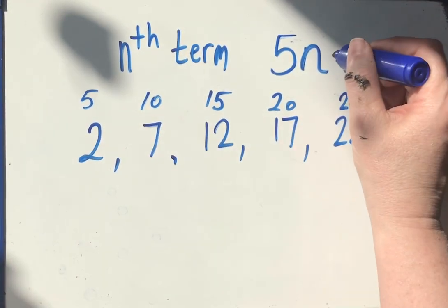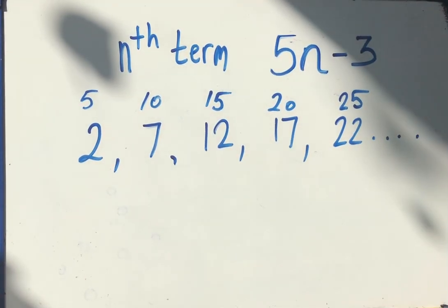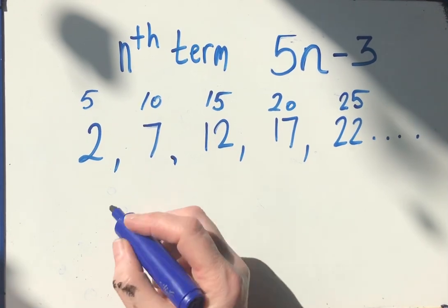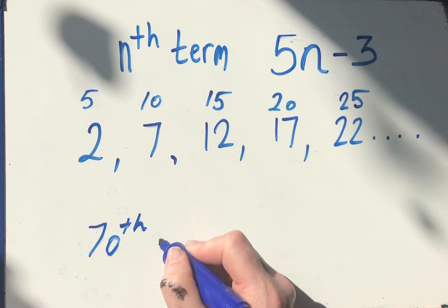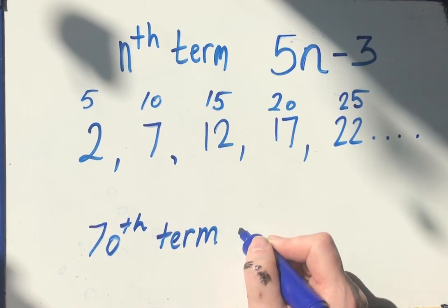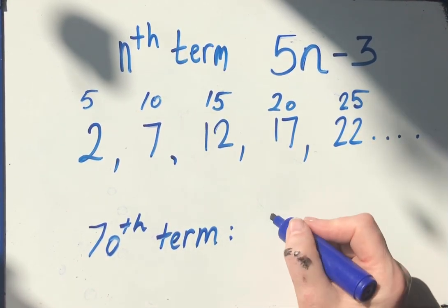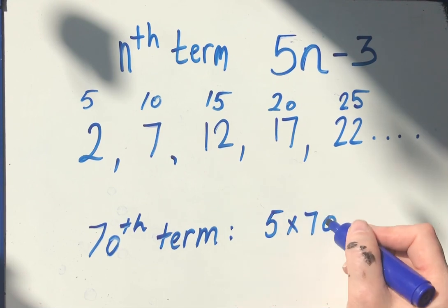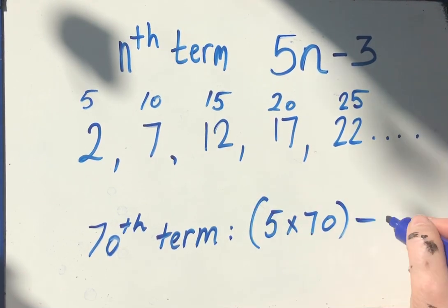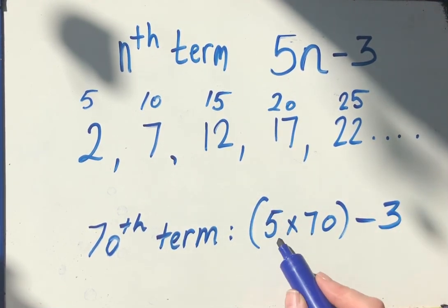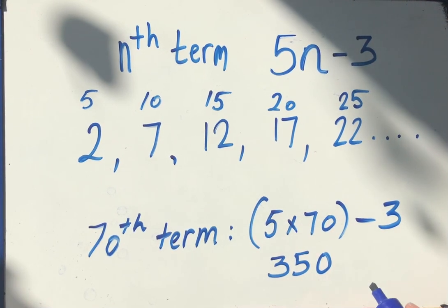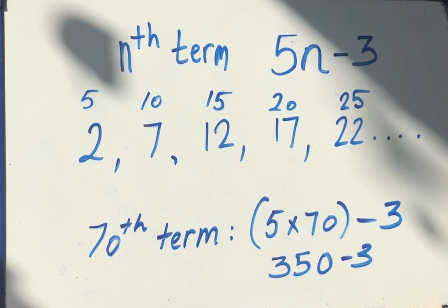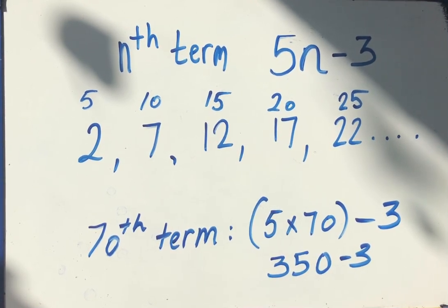So if I wanted the 70th term, I have to do 5 times 70 and then take away 3. So 5 sevens are 35 times 10 is 350, take away 3. So the 70th term is 347.